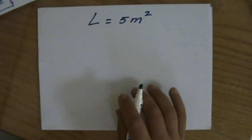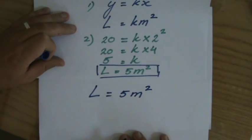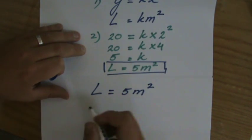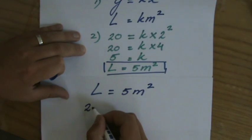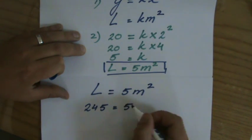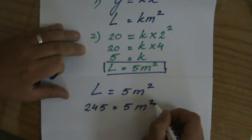We said L equals 5m squared. And they're asking me now... I'll do that like this. They're asking me to find m when L is 245. So L is 245.